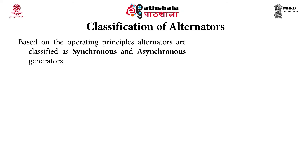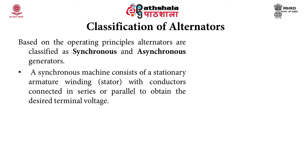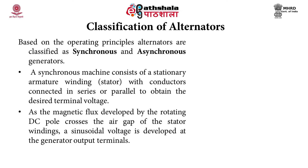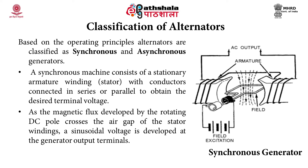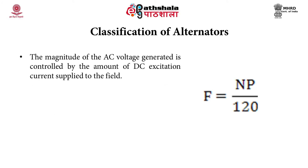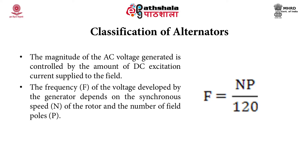Based on operating principles, alternators are classified as synchronous and asynchronous generators. An asynchronous machine consists of a stationary armature winding on the stator, with conductors connected in series or parallel to obtain the desired terminal voltage. As the magnetic flux developed by the rotating DC pole crosses the air gap of the stator windings, a sinusoidal voltage is developed at the output terminals through electromagnetic induction. The magnitude of AC voltage is controlled by the DC excitation current, and the frequency F equals NP divided by 120, where N is synchronous speed and P is the number of field poles.